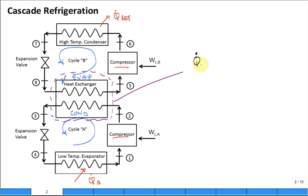And it'll be Q dot out of the fluid in A is equal to the rate of heat transfer that's into the fluid in cycle B. And the out of the fluid in A is the mass flow rate of A times the enthalpy 2 minus enthalpy 3.